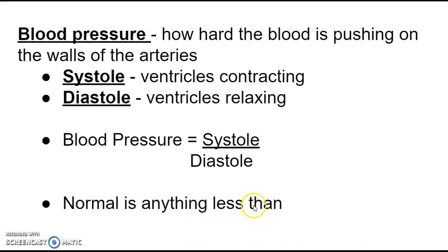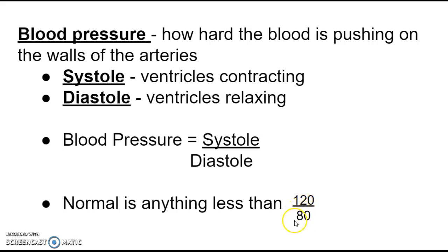Normal blood pressure is anything less than 120 over less than 80. It's not just enough to have the top number be less than 120 — we also want the bottom number to be less than 80. The top number tells us the pressure when we're squeezing and pumping blood into the arteries, and we don't want that number to be super high. High blood pressure can damage the arteries. We also don't want the bottom number to be high, because even when the ventricles are relaxed we don't want excessive pressure in the arteries.